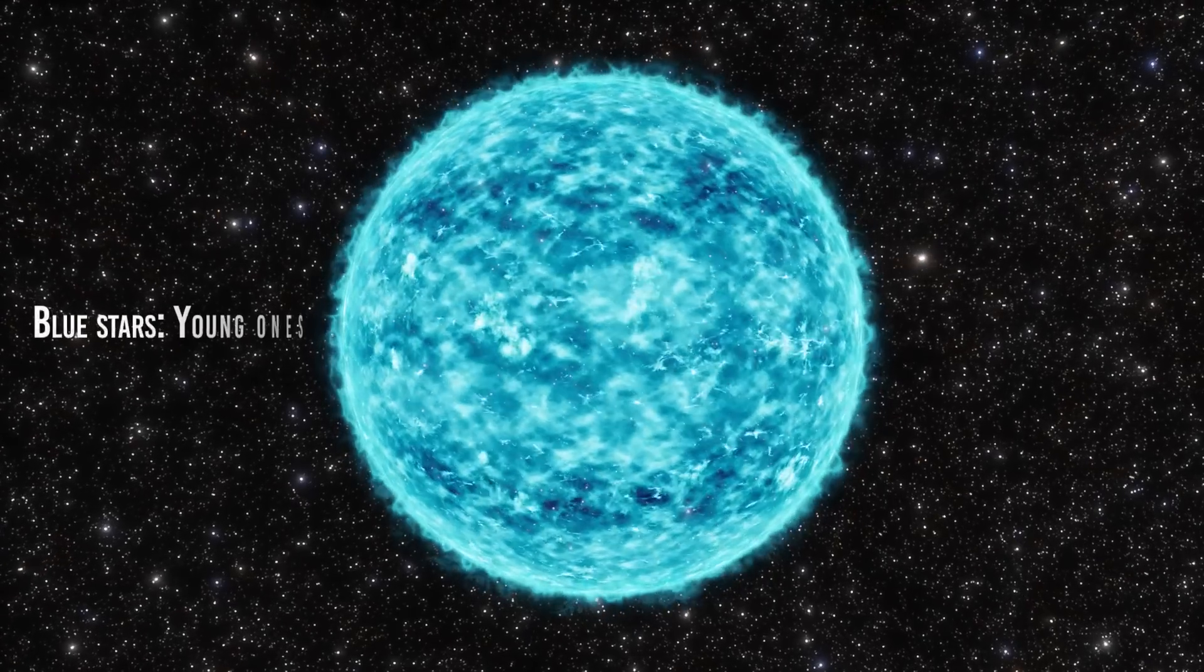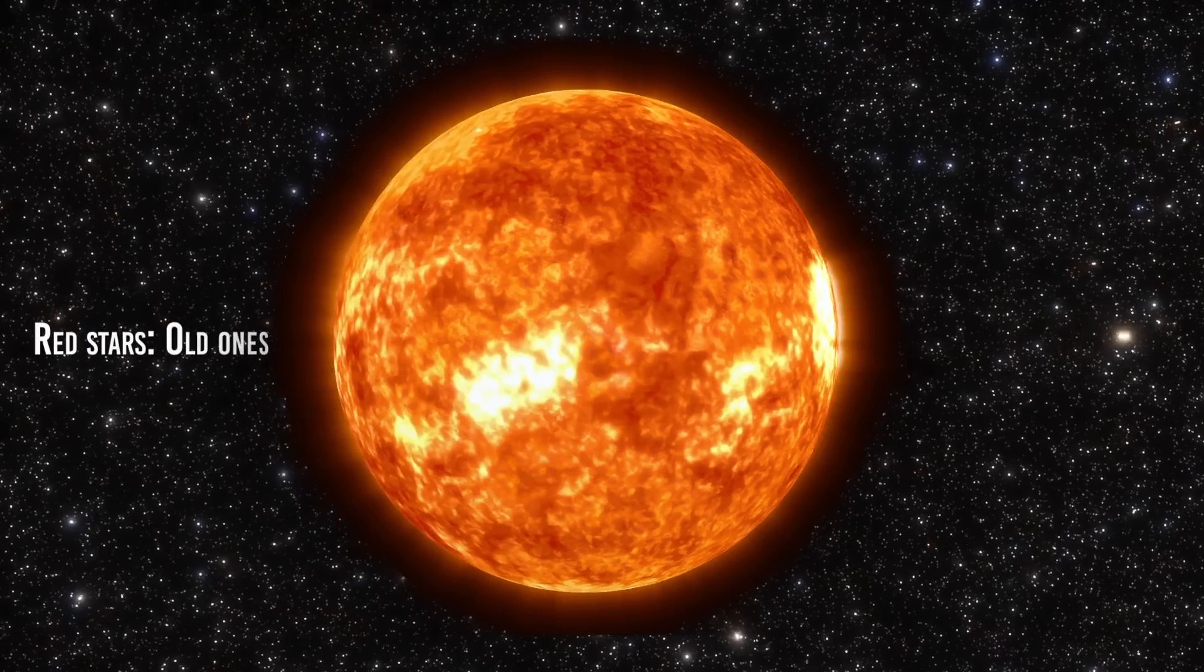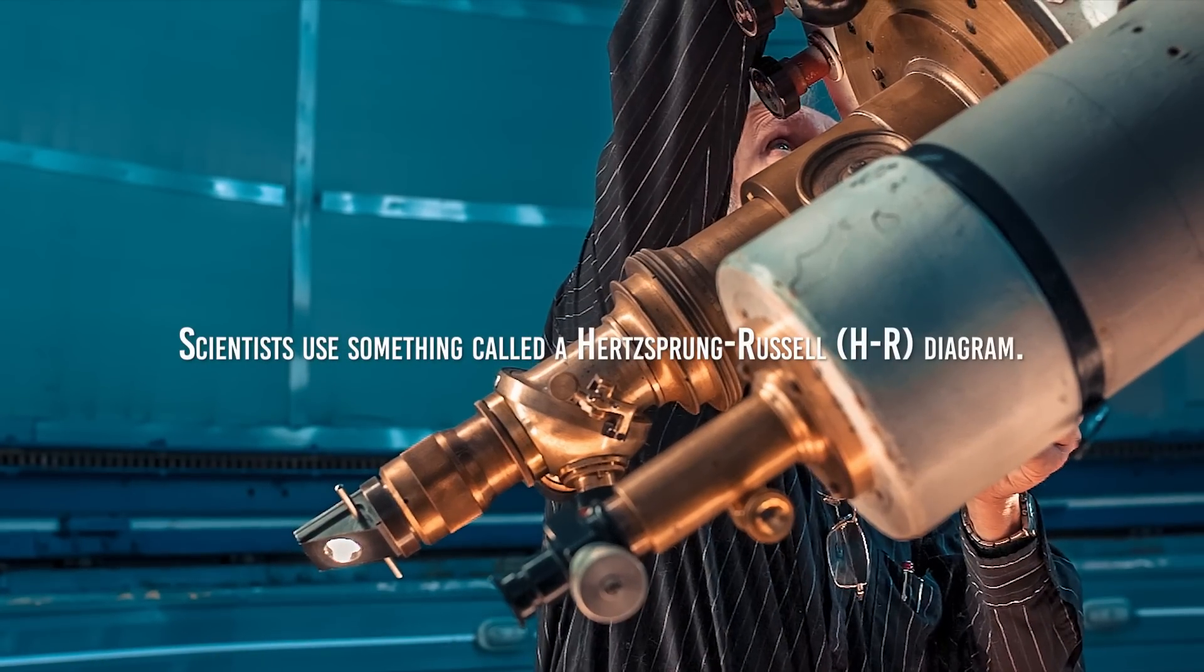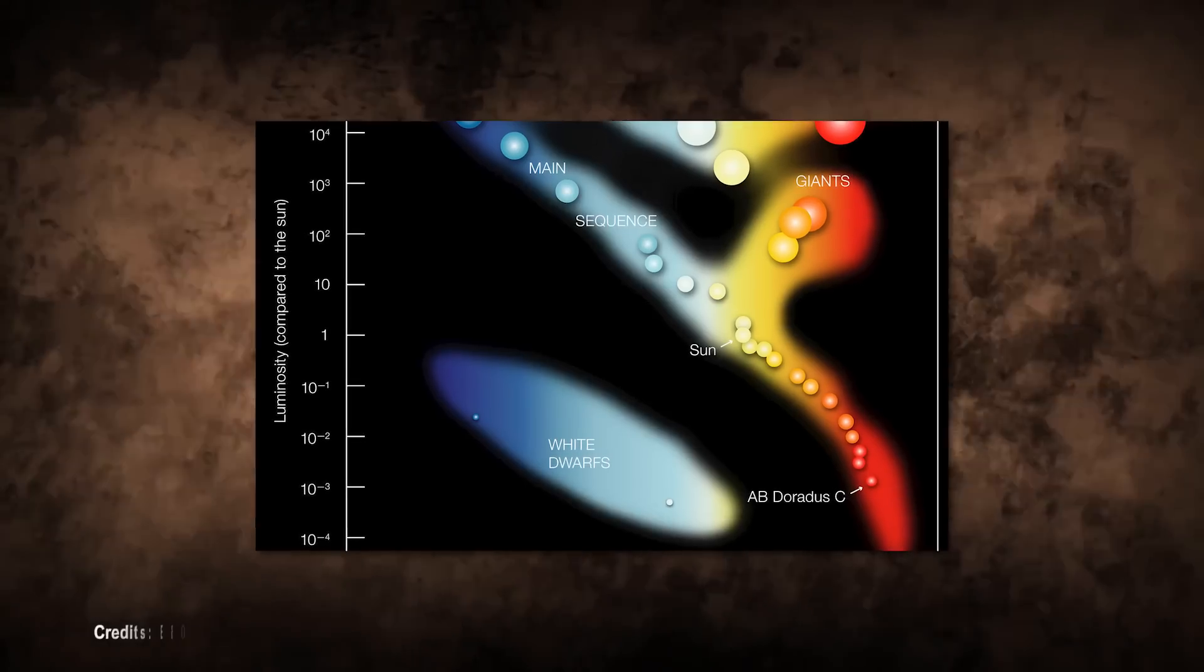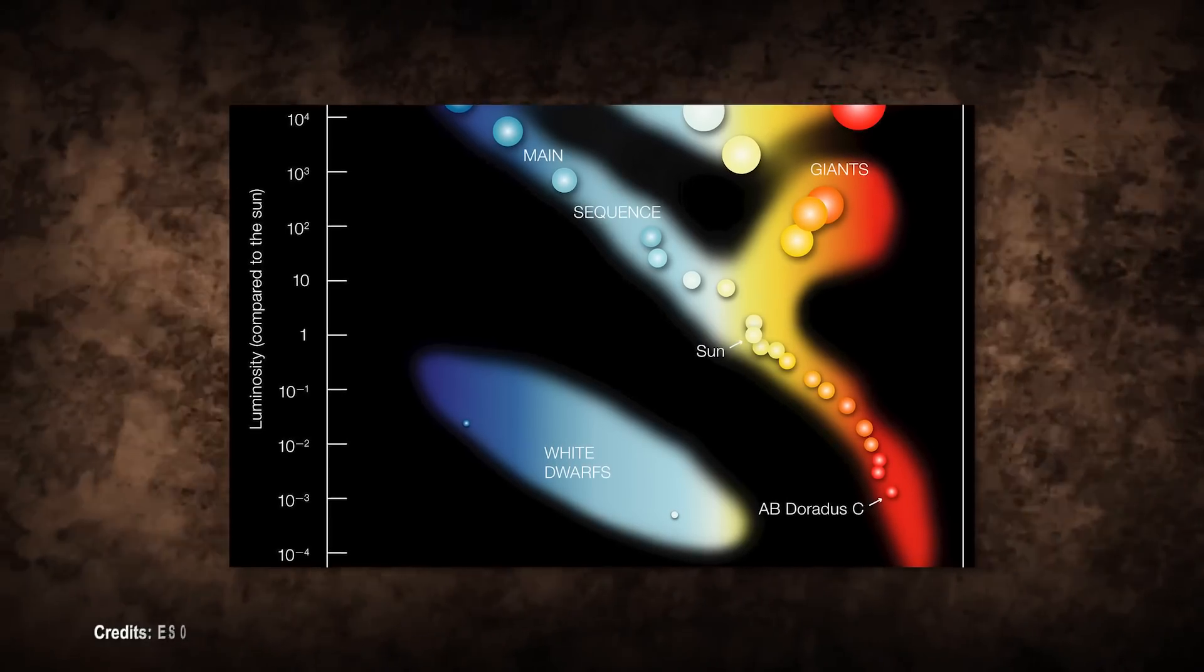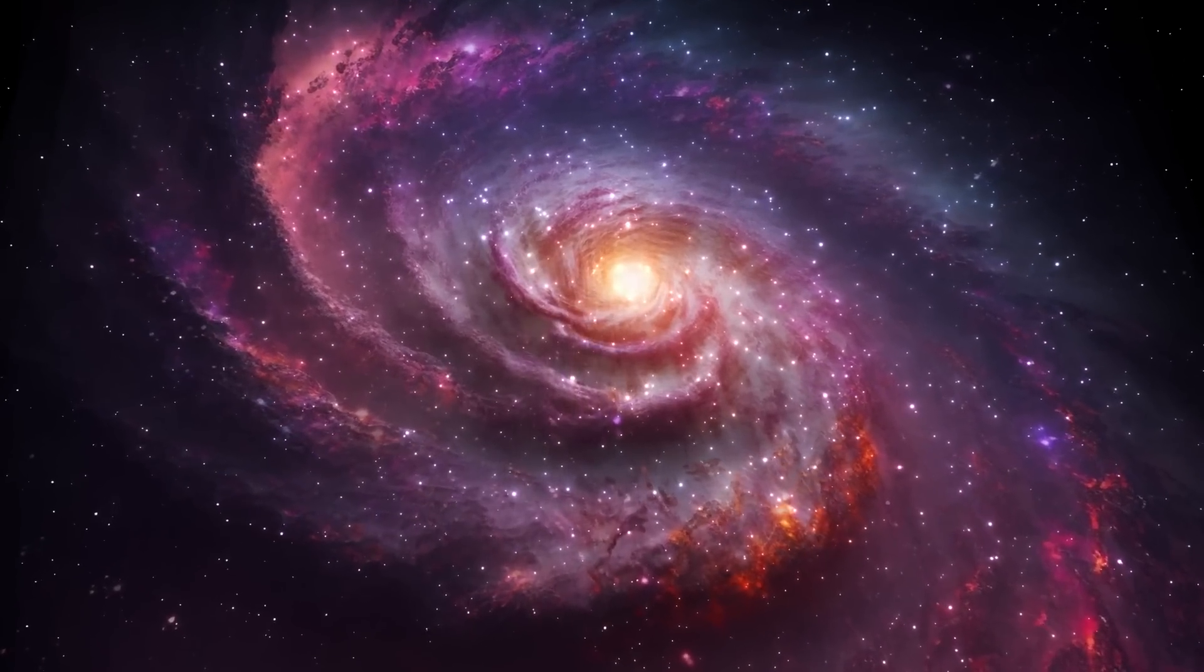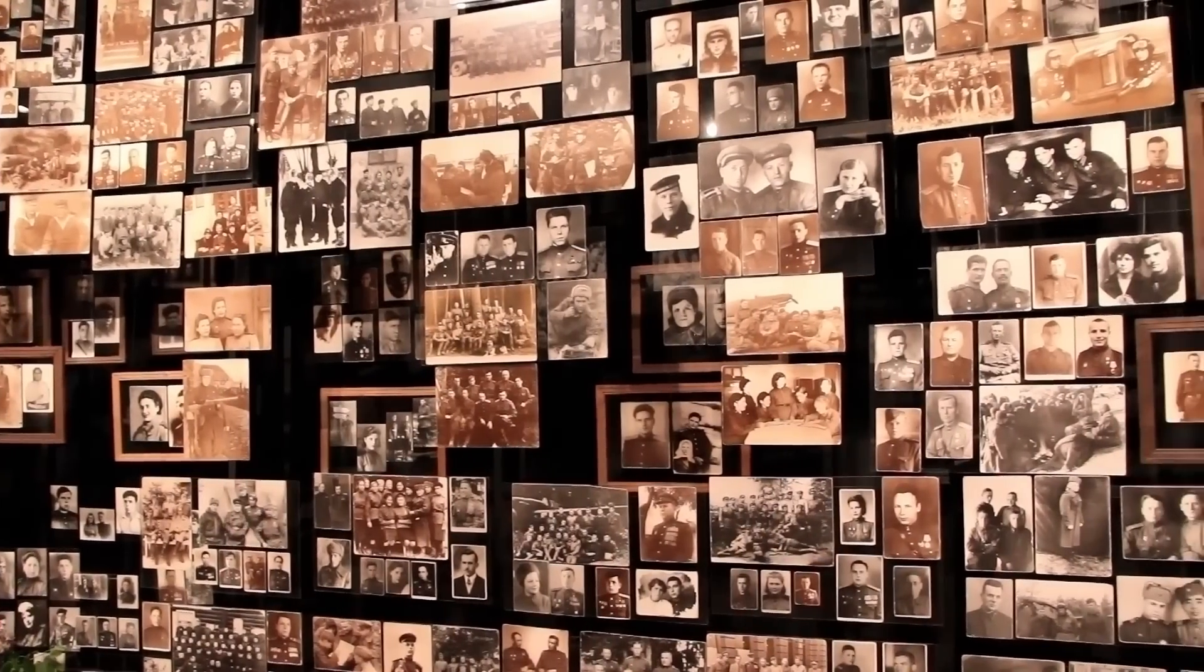For instance, blue stars are often associated with younger ones. Redder stars are representative of old stars. To be more specific, scientists use something called a Hertzsprung-Russell diagram, which is like a special chart for stars. It sorts them based on color and brightness. By comparing a star's position on this chart to others, astronomers can estimate its age. It's a bit like guessing someone's age by looking at their photo among a bunch of people.